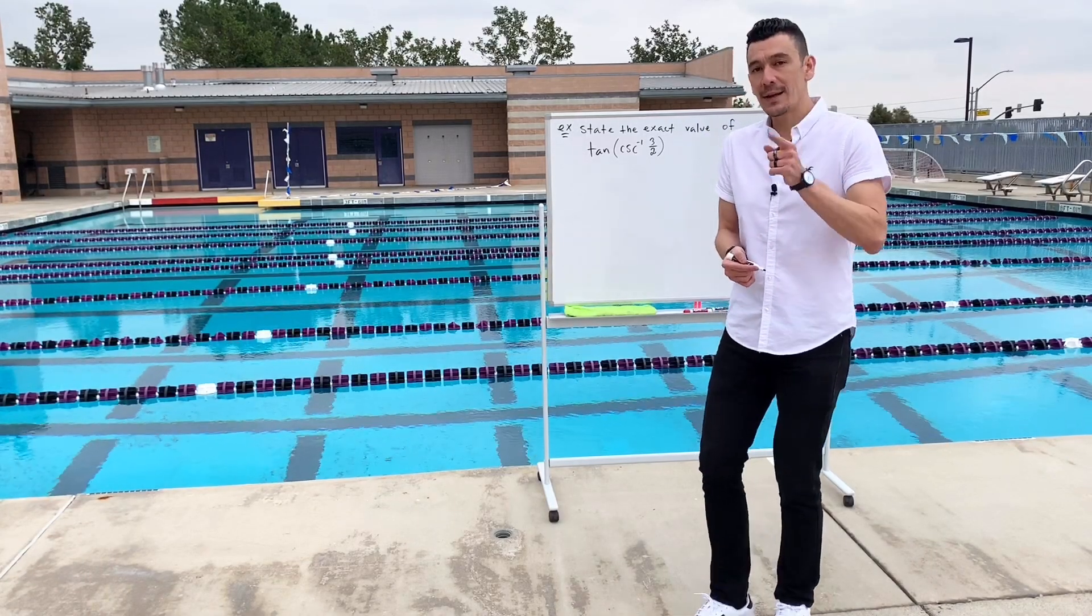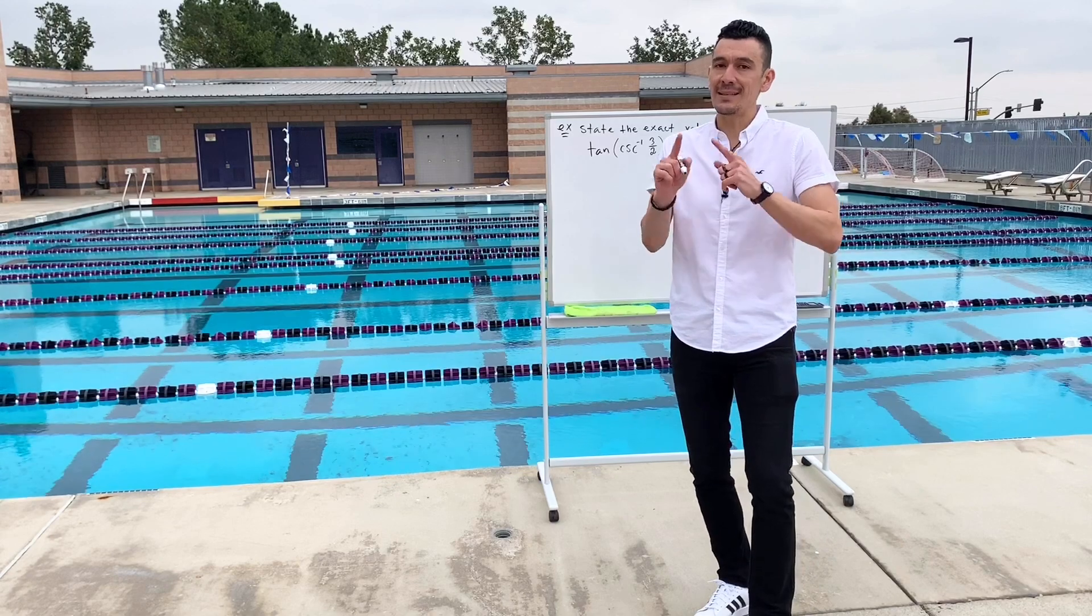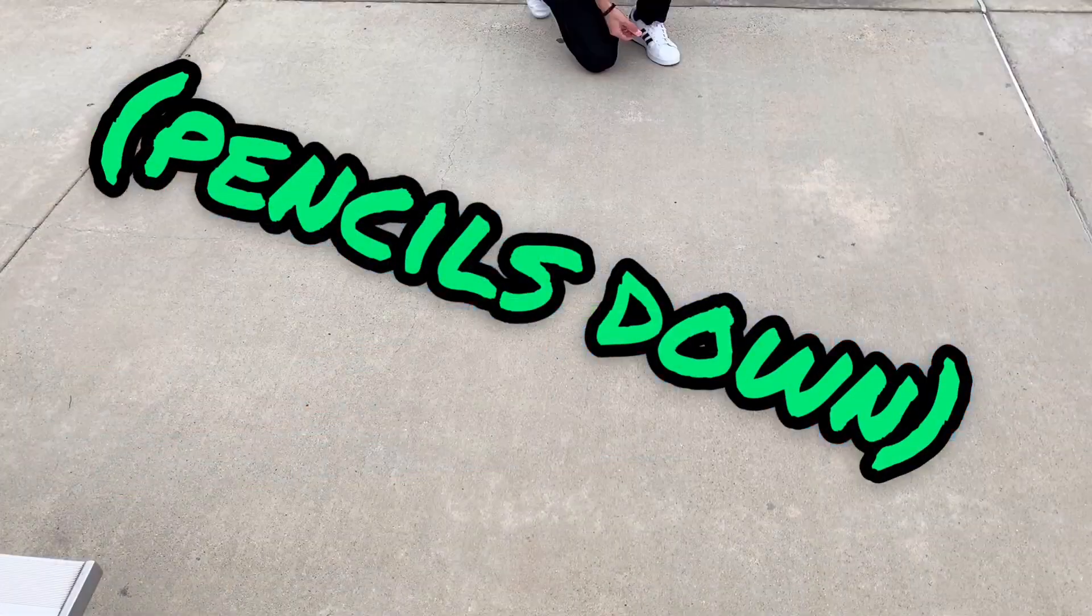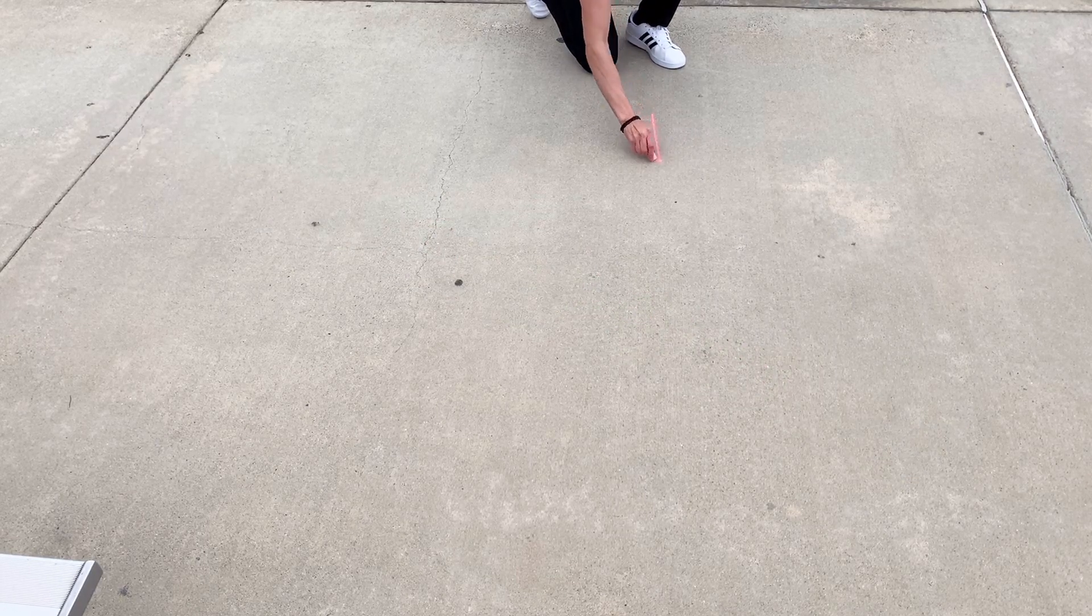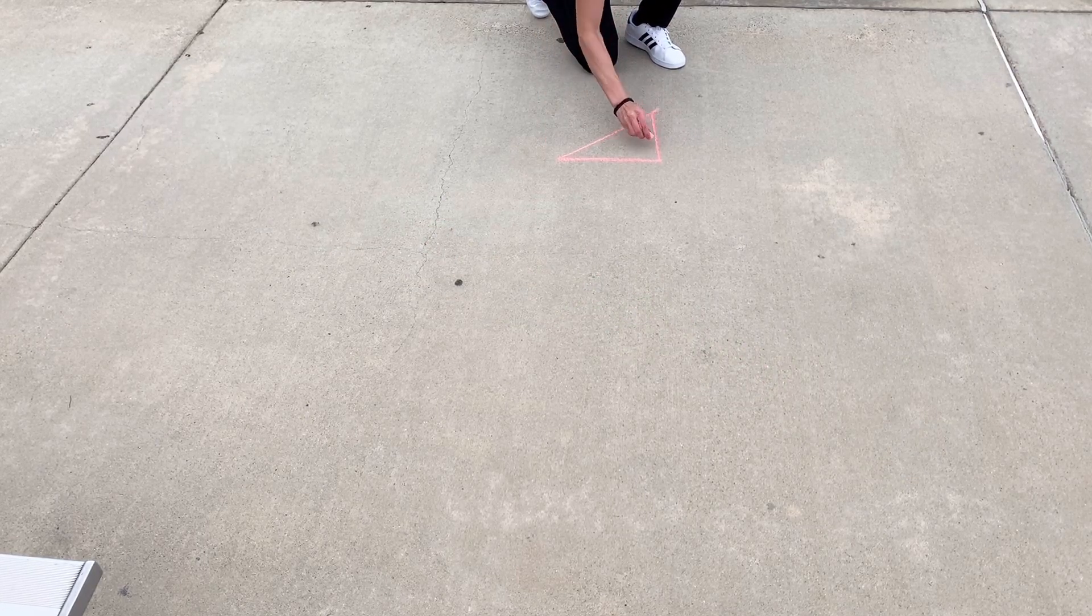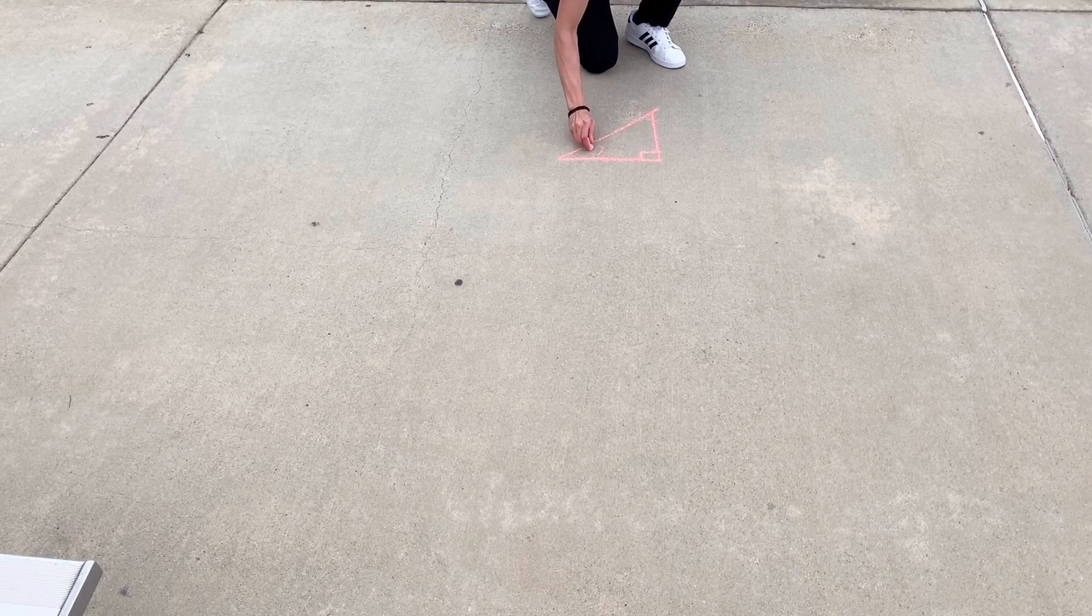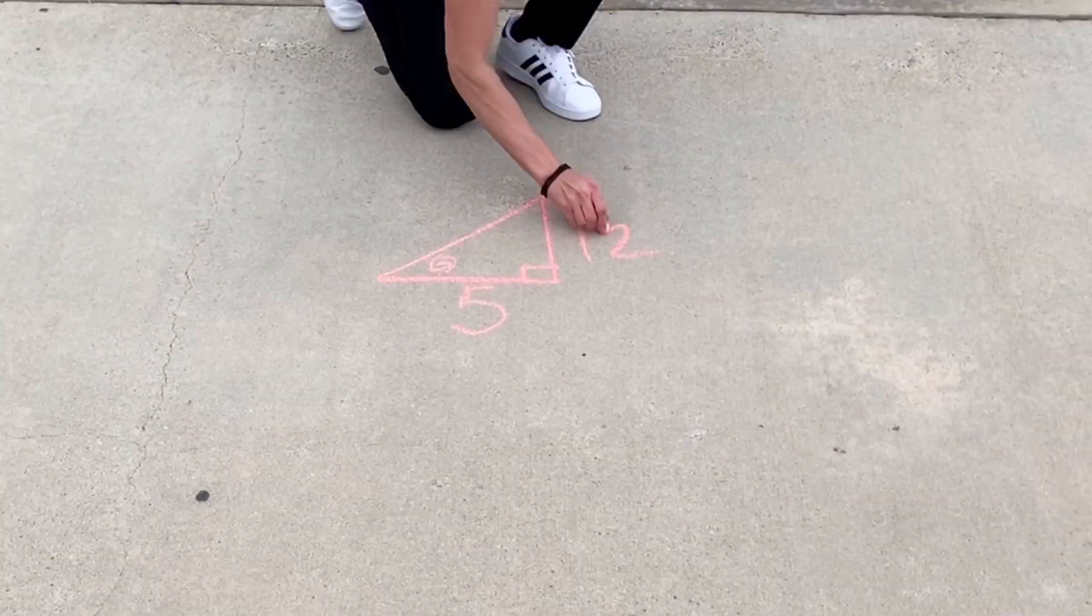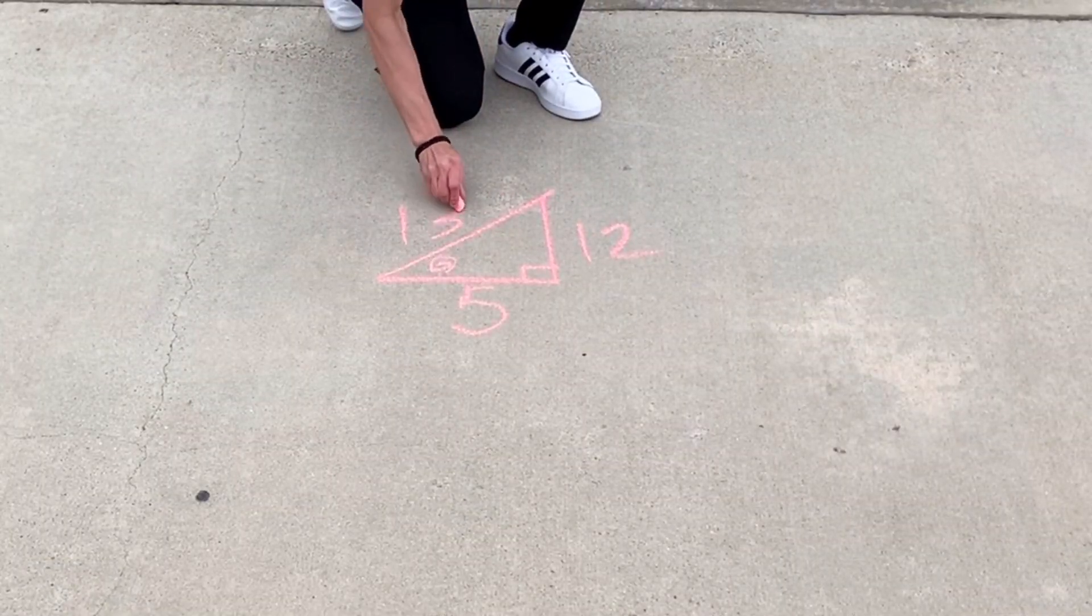Let's take a really quick timeout because there's something fundamental that I want to establish with you guys. Quick timeout, just a really quick FYI. Suppose that I gave you a right triangle that looks something like this. Let's say that this is theta. Let's say this is 5, this is 12, and this is 13.